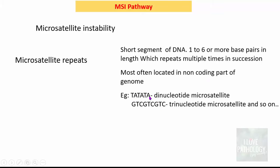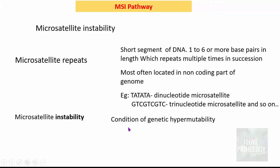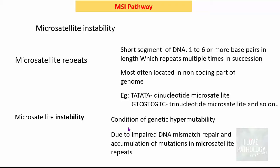Examples include TA-TA-TA, a dinucleotide microsatellite, or GTC-GTC-GTC, a trinucleotide microsatellite. There can also be tetranucleotide and pentanucleotide microsatellites and so on. Microsatellite instability is a condition of genetic hypermutability caused by impaired DNA mismatch repair. Whenever there are mutations in the DNA mismatch repair genes, there is accumulation of mutations in these microsatellite repeat regions, and that condition is referred to as microsatellite instability.